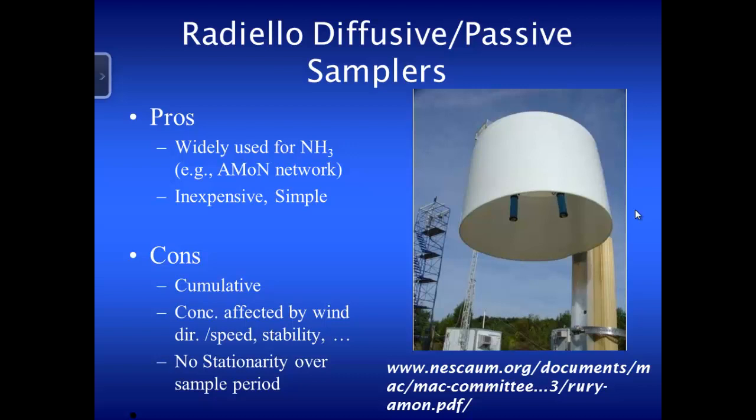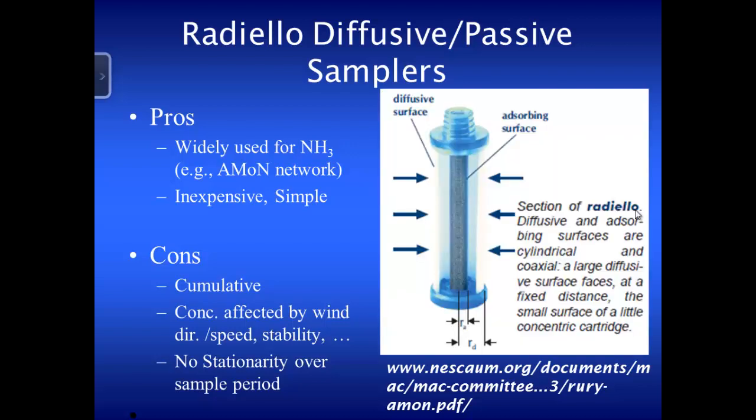Or if the wind's blowing from the other direction, you get a completely different result. It's different than just doing ambient monitoring out in a cornfield or up in a forest. So you need a way to conditionally sample — only under certain conditions.